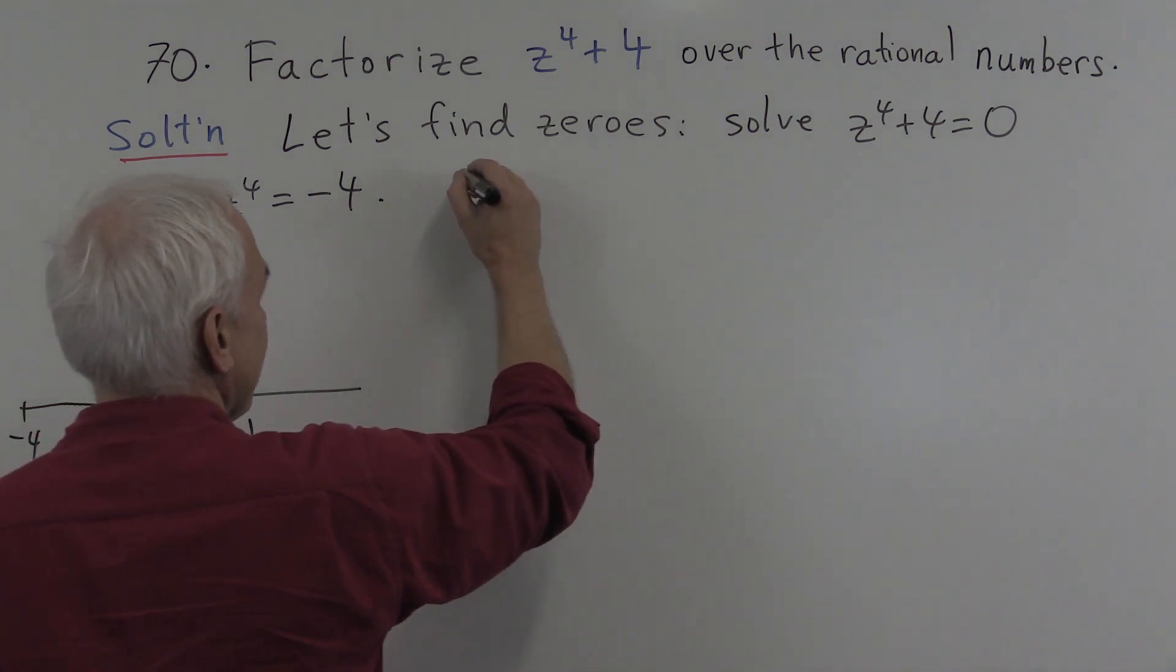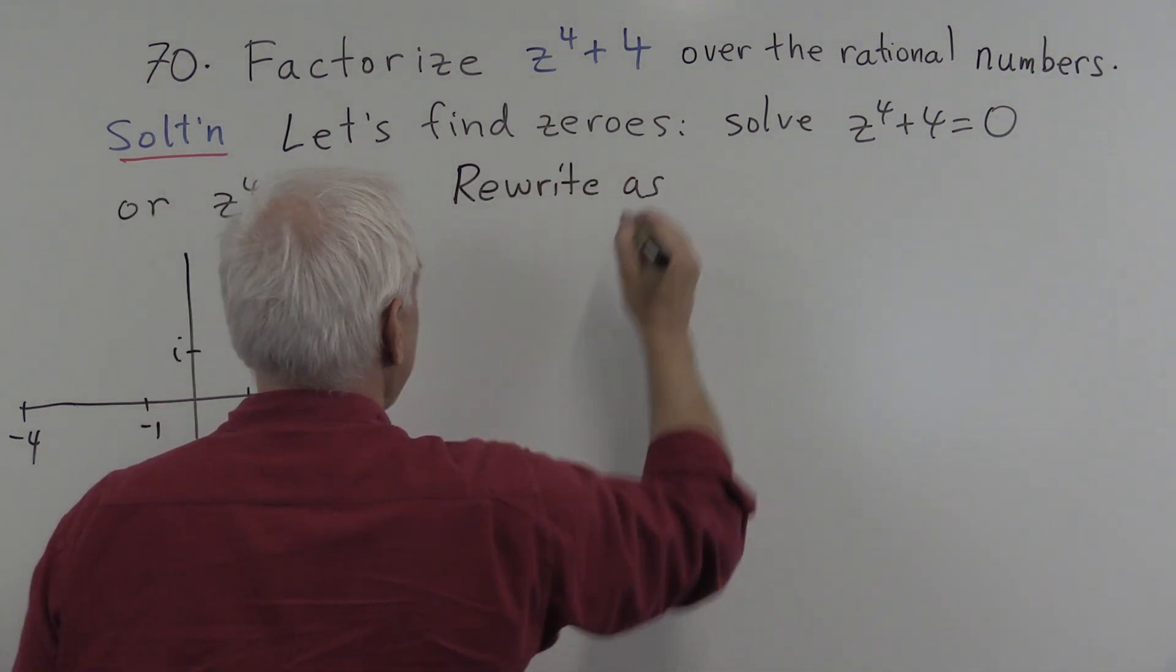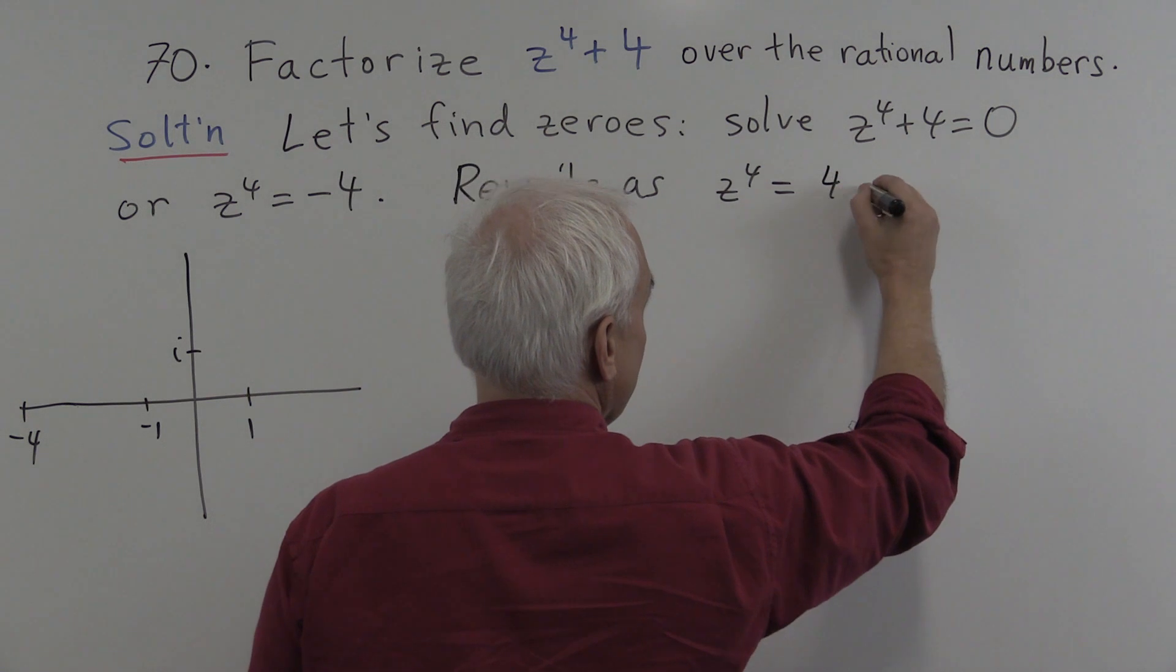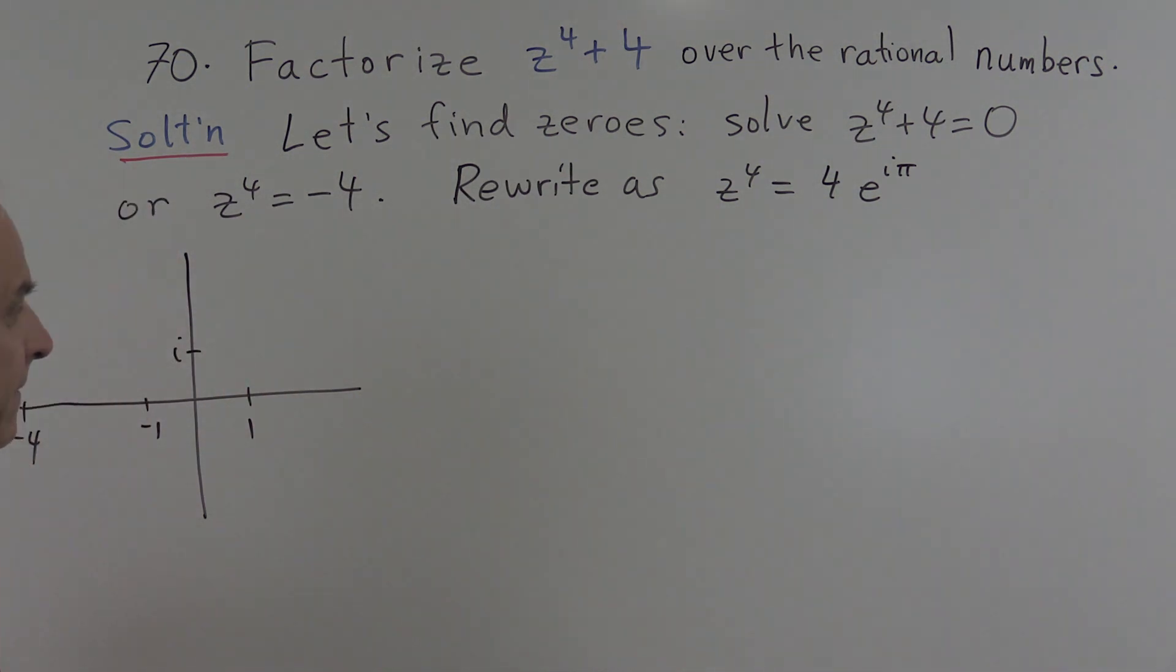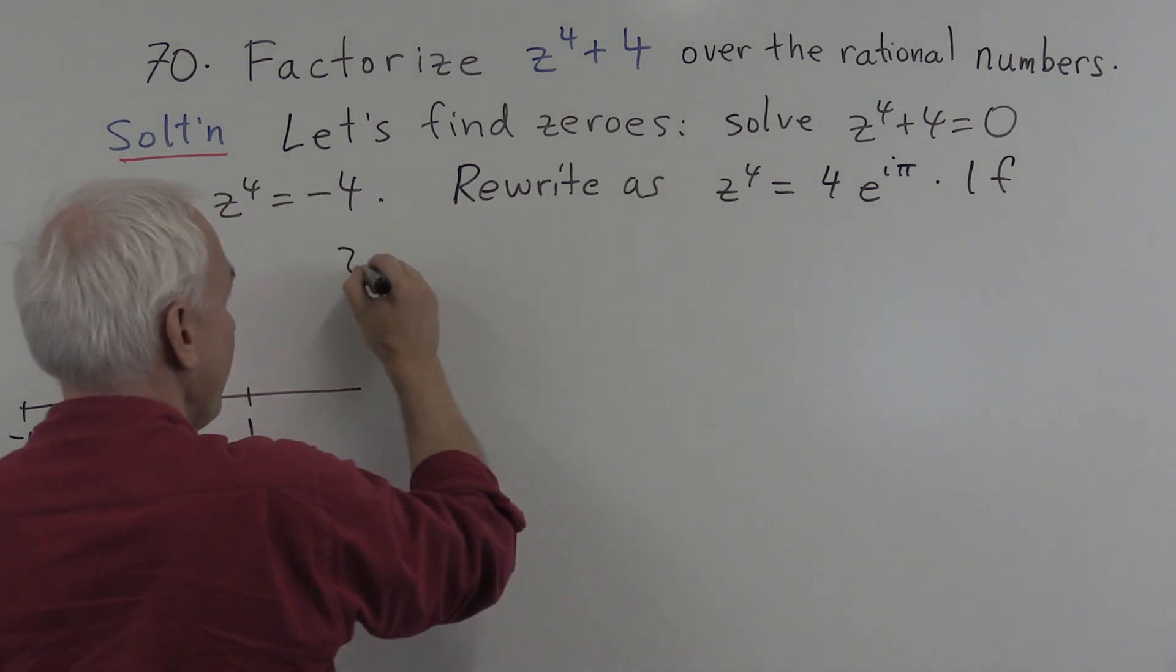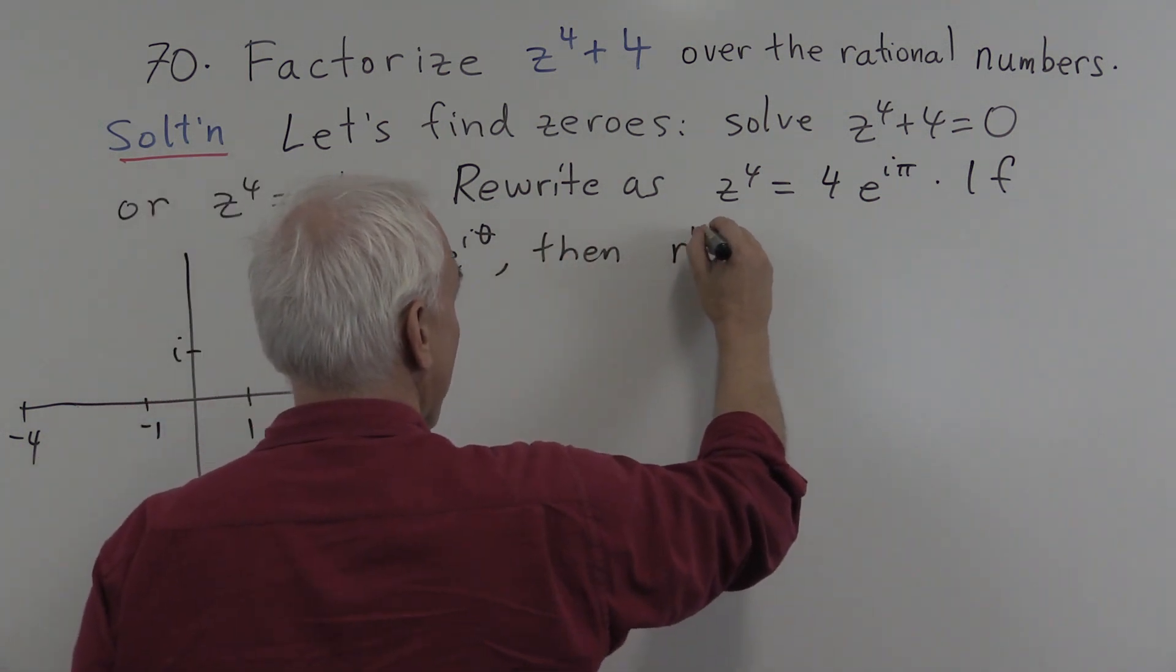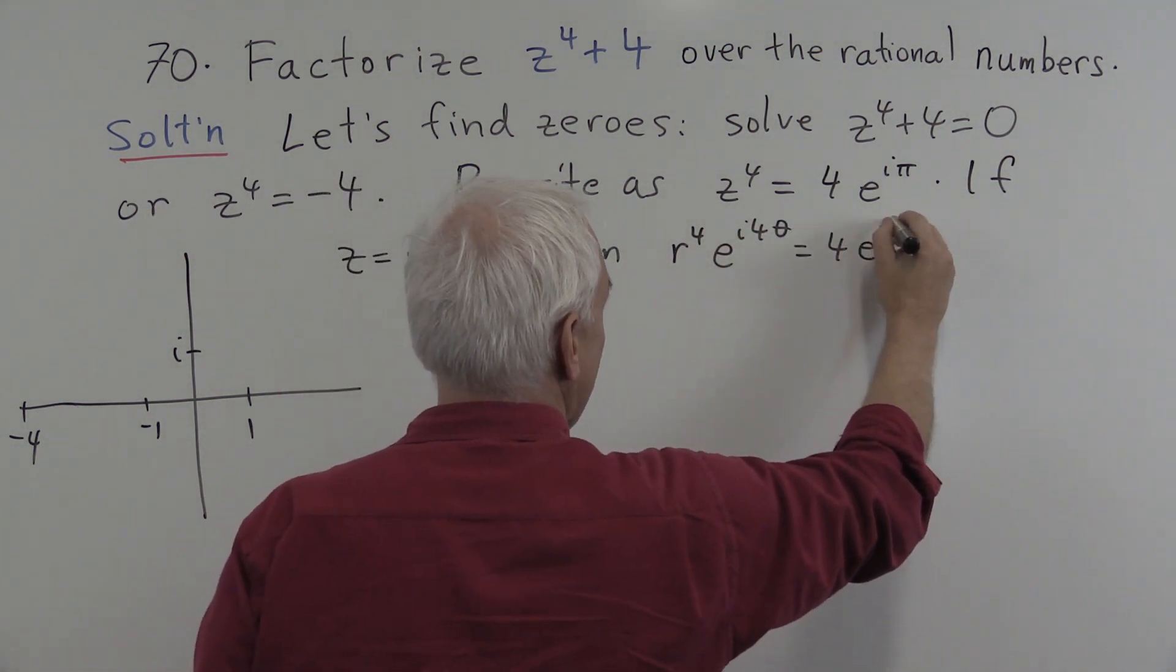Well let's write the equation as z to the fourth equals minus 4 is 4 times e to the i pi. That's in polar form. And so if z is also in polar form, say r e to the i theta, then we have the equation r to the fourth e to the i four theta equals 4 e to the i pi.